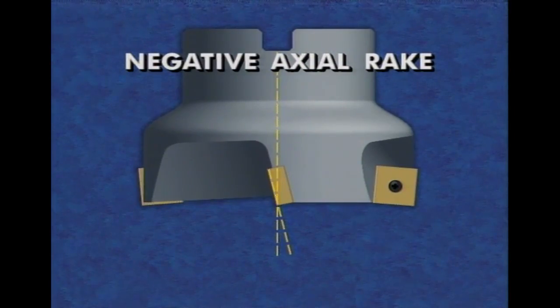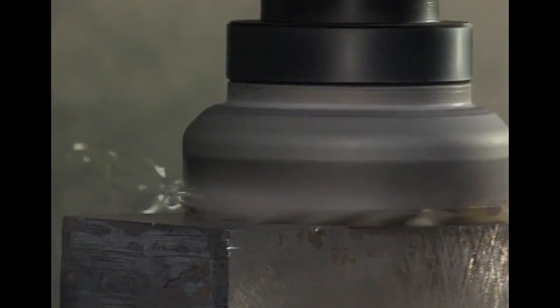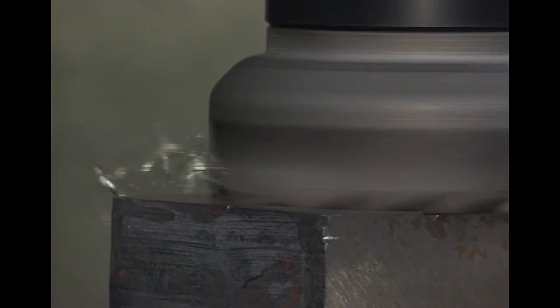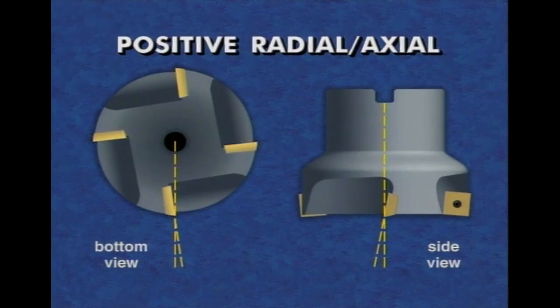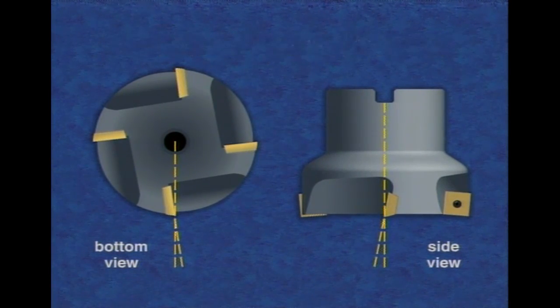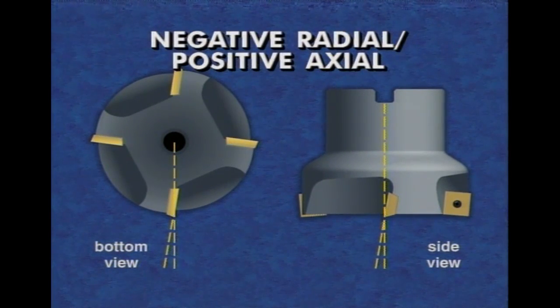The combination of axial and radial rake angles yield three geometries of milling cutters: negative radial and axial, which offers the strongest edges but generate the greatest cutting forces; positive radial and axial, which provides the freest cutting; and negative radial positive axial, which presents a strong edge to the work but pulls the chip up.